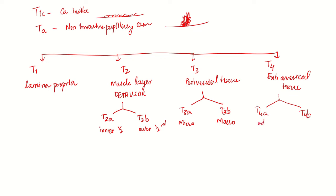T4A is for adjacent structures. So this is the bladder—involvement of prostatic stroma, seminal vesicles, or the upper third of vagina. Direct invasion into vagina is considered T4A. T4B is invasion into wall, either pelvic wall or abdominal wall.